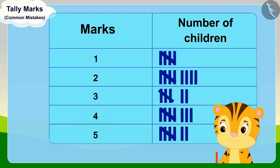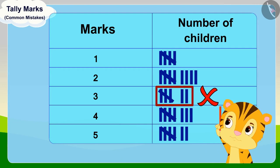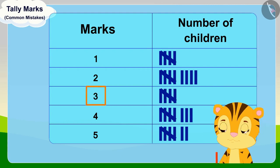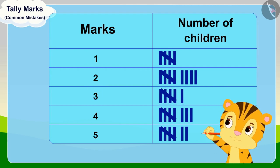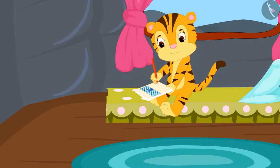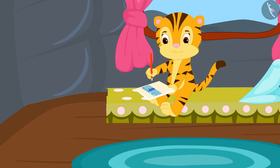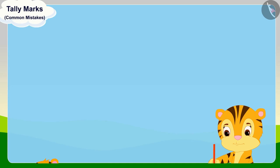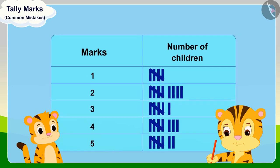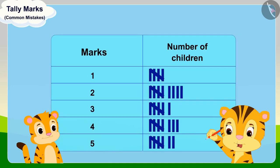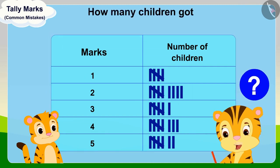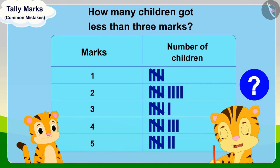Mrs. Khan realized this mistake and immediately corrected it, drawing one group of tally marks and one line for three marks. When Mrs. Khan's table was completed, Sher Khan came there. Mrs. Khan showed him the table and asked, Sher Khan, can you look at this table and tell me how many children got less than three marks?